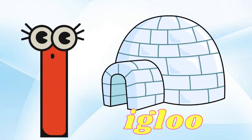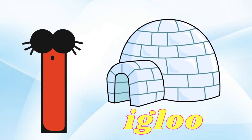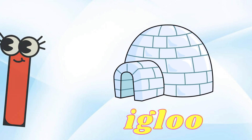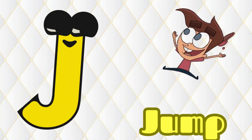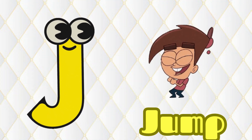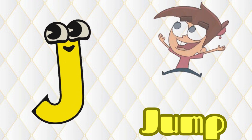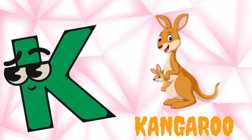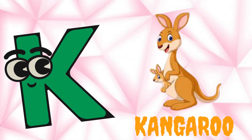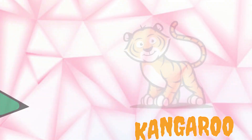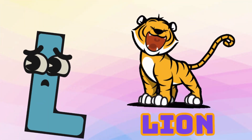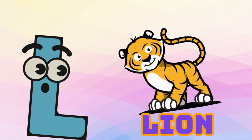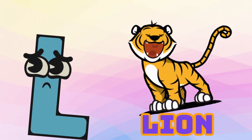I is for Igloo, I-I-Igloo. J is for Jump, J-J-Jump. K is for Kangaroo, K-K-Kangaroo. L is for Lion, L-L-Lion.